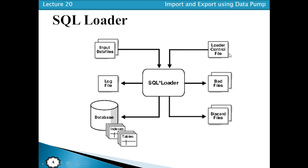After that, we have the concept of control files. In control files, we can perform three main types of operations. The first is INSERT. If we have a table available in the database and that table does not have any data — if it is a new, empty table — then we can use the INSERT operation in the control file.